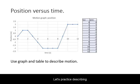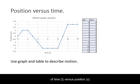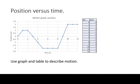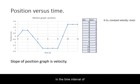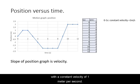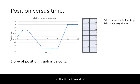Let's practice describing the motion of an object represented in this graph. For reference, the table of time versus position has also been provided on the right. In the time interval of 0 to 1 second, the object is moving in the positive direction with a constant velocity of 1 meter per second. In the time interval of 1 to 2 seconds, the object is stationary at the position of 1 meter.